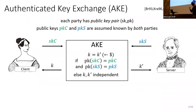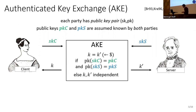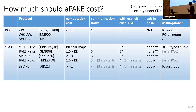For completeness, since we will use this as a tool: an authenticated key exchange (AKE) is where two parties have private/public keys. The public keys are like a common reference string under which they execute. If each party supplies their private key, the keys are established. That is the public-key counterpart — authenticated key exchange.